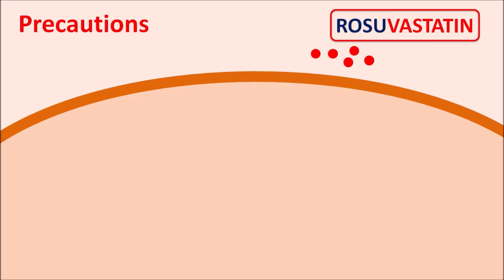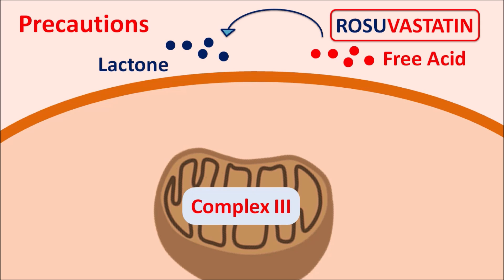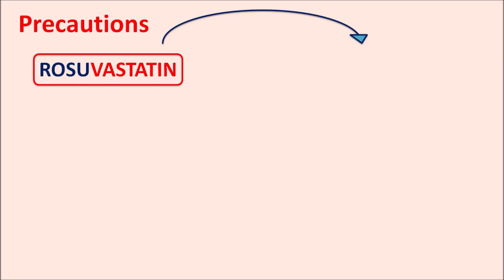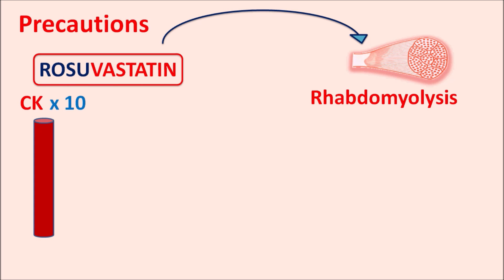Myopathy produced by rosuvastatin is not due to the parent drug itself. Although the drug exists as a free acid, in vivo it can be converted into a lactone form when the side chain closes into a ring. This lactone acts on the respiratory chain — specifically targeting complex 3 — thereby inhibiting the respiratory chain. As a result, ATP release from the mitochondria is reduced, and free radicals are produced in greater quantities, leading to muscle damage and myopathy. With increased doses, rosuvastatin can also produce rhabdomyolysis — the damage and dissolution of muscle fibers — with creatine kinase levels rising up to 10 times normal.